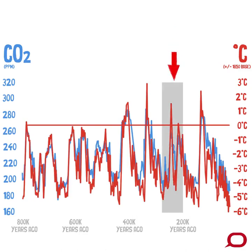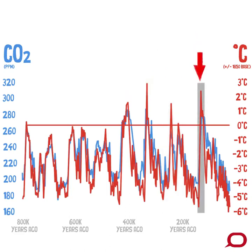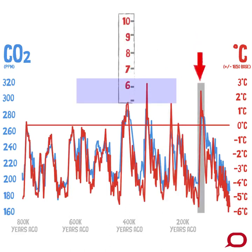Here, at about 200,000 to 300,000 years ago, is where modern humans had just evolved. And here, at the last interglacial period, the sea level peaked at about 6 to 9 metres higher than it is today.